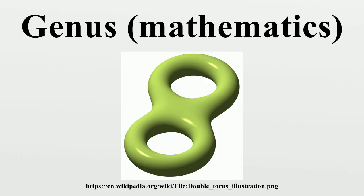This is the source of the joke that a topologist is someone who can't tell his donut from his coffee mug. An explicit construction of surfaces of genus g is given in the article on the fundamental polygon.